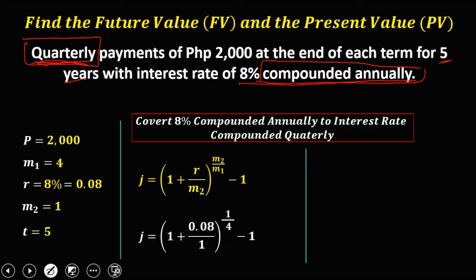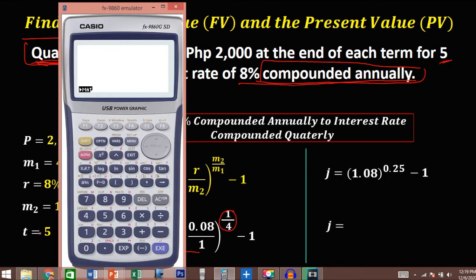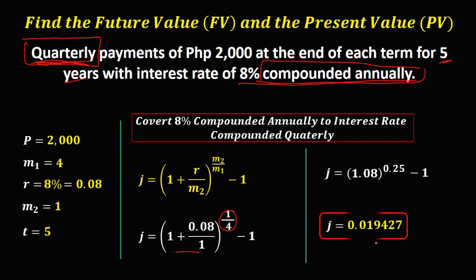Simplifying: 1 plus 0.08 over 1, raised to the power 0.25, then minus 1. Solving for J, we have 1.08 to the power 0.25, minus 1, which equals 0.019427. So 0.019427 is now the interest rate compounded quarterly.